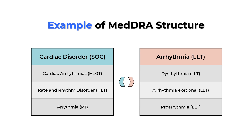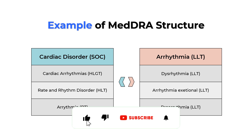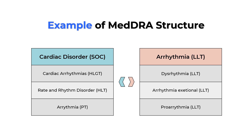For example, Cardiac Disorders — a disorder related to the heart — is a System Organ Class; there are 27 such classes. Within Cardiac Disorders, Cardiac Arrhythmias is a High Level Group Term. Inside arrhythmia, Rate and Rhythm Disorders is a High Level Term. Arrhythmia itself is a Preferred Term. Below the Preferred Term are Low Level Terms, which can be multiple — for example: arrhythmia, dysarrhythmia, proarrhythmia, and so on. So in descending order: System Organ Class → High Level Group Term → High Level Term → Preferred Term → Low Level Term.